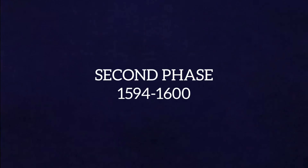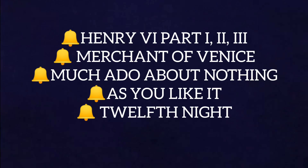The second phase falls between 1594 to 1600. In this period he wrote chronicle history plays and comedies. The major works include plays such as Richard II, Henry IV Parts 1 and 2, Henry V, and comedies such as A Midsummer Night's Dream, The Merchant of Venice, Much Ado About Nothing, As You Like It, and Twelfth Night.